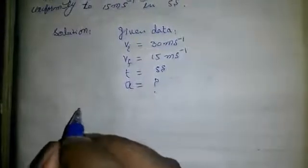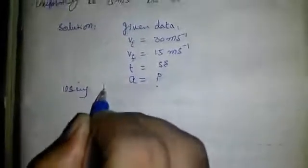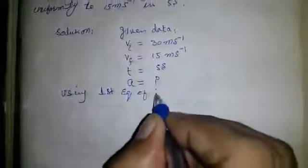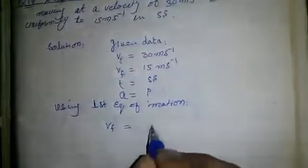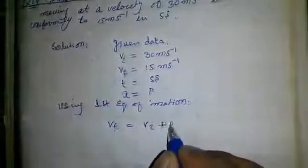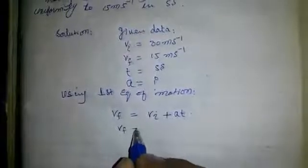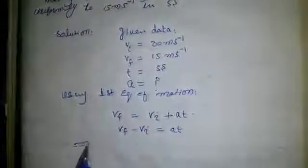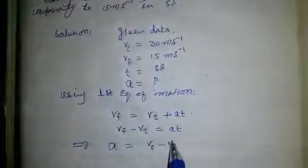Now using first equation of motion: vf is equal to vi plus at. Or vf minus vi is equal to at. This implies a is equal to vf minus vi over t.